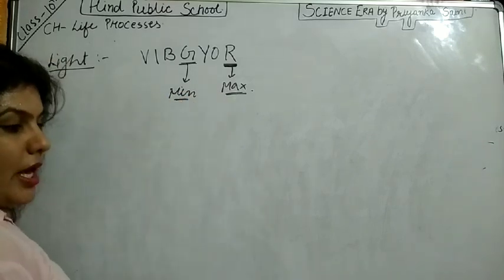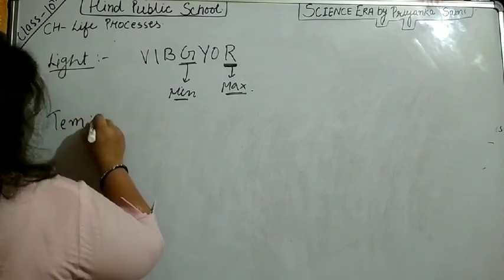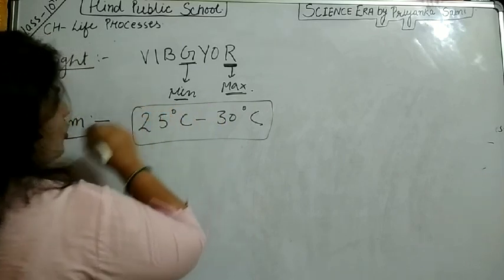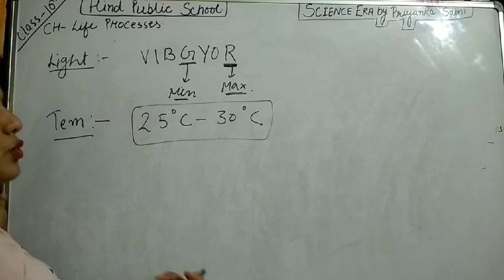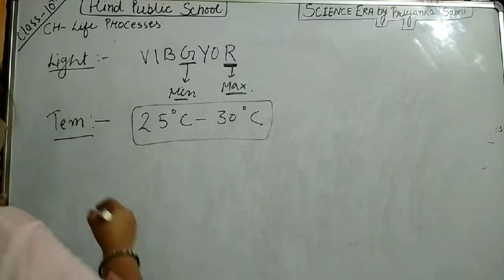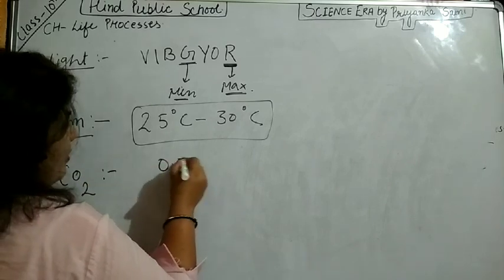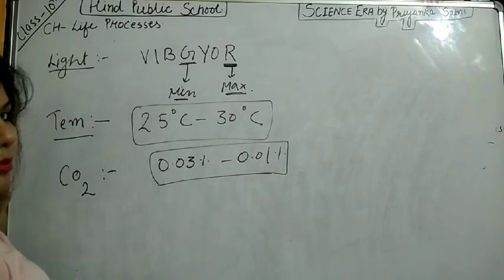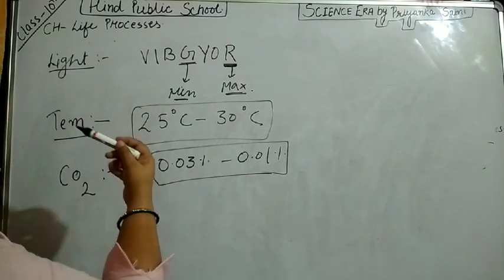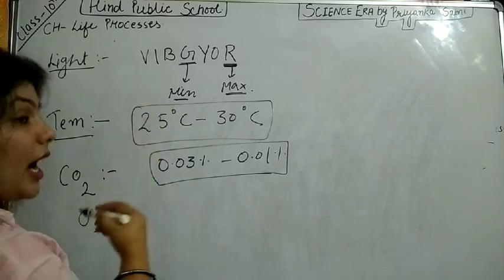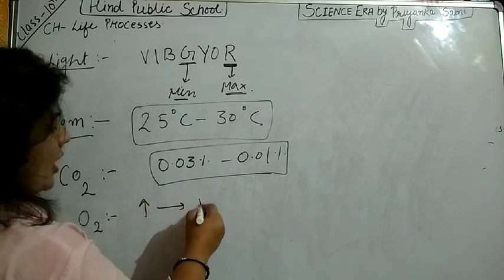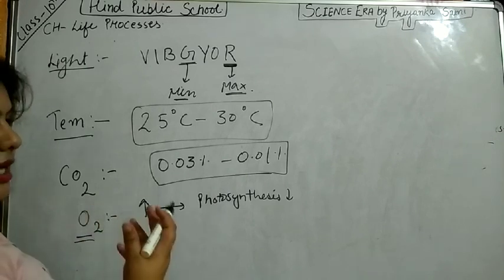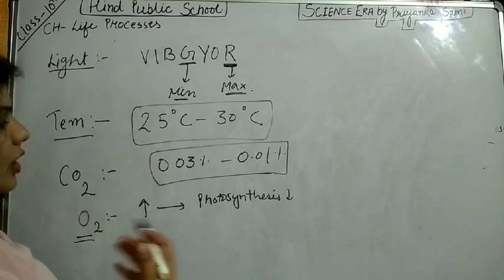Maximum photosynthesis occurs at red color and minimum at green color. Next factor is temperature: the best temperature range for the photosynthesis process is 25 to 30 degrees centigrade. If temperature increases too much, photosynthesis will also go down. Next is carbon dioxide: in the range of 0.03% to 0.01%, a very good photosynthesis process can occur. Then comes oxygen: if oxygen is present in very high quantity, your photosynthesis will become low — because carbon dioxide is the raw material, oxygen is already the product, so if oxygen is more, photosynthesis decreases.